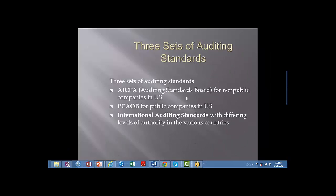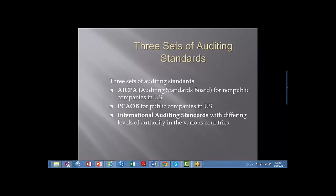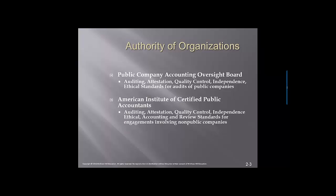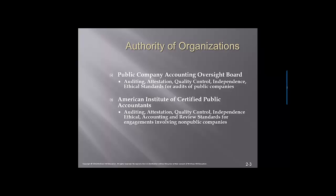There are three auditing standards bodies. The AICPA provides auditing standards for non-public companies — non-issuers. The PCAOB provides audit standards for public company audits. And then we have international auditing standards with differing levels of authority depending on various countries. The PCAOB provides standards related to auditing, attestation, quality control, independence, and ethical standards for audits of public companies. The AICPA provides these for non-public companies. State boards of licensure provide the license for the CPA and for CPA firms to practice in their jurisdiction.